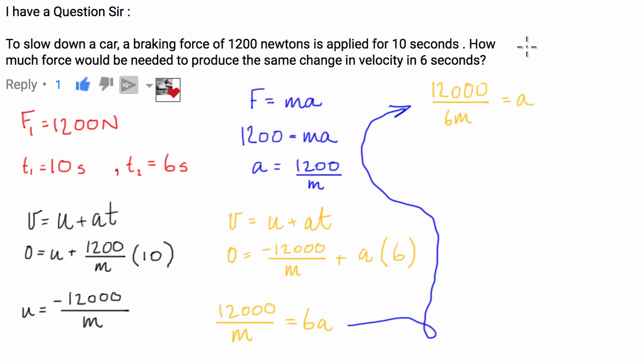So we can simplify this. 12,000 on 6 is just 2,000 on M is equal to A.